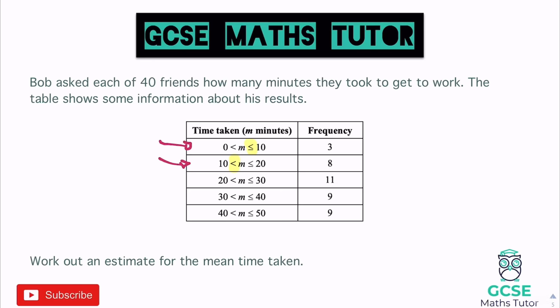To finish off, we divide our overall total of 1130 by the 40 people. 1130 ÷ 40 = 28.25 minutes, which is our estimated mean. Looking back at the table, 28.25 sits within the 20 to 30 category, which is also the most popular group with 11 people - so that makes sense. That's how you get an estimated mean from a grouped frequency table. Don't be put off by the term 'grouped frequency' - it just means the table has class intervals rather than exact numbers.